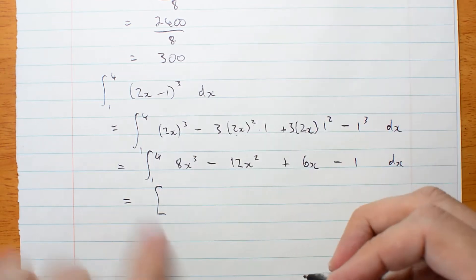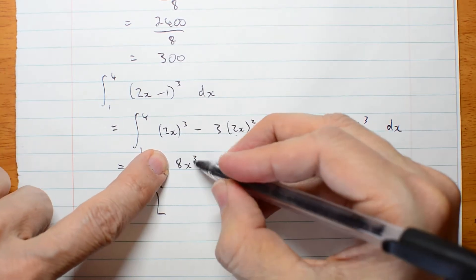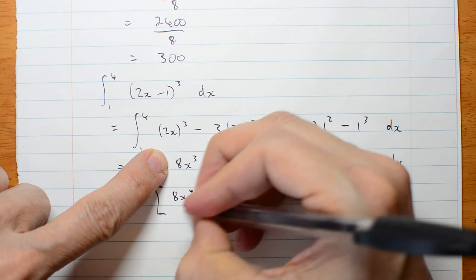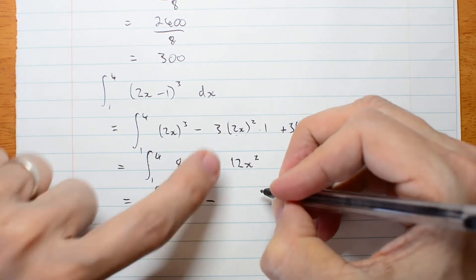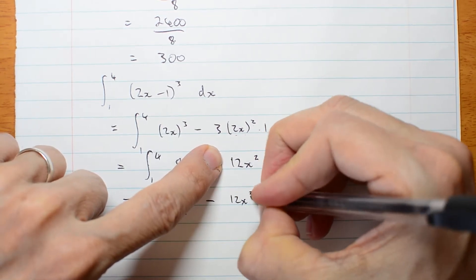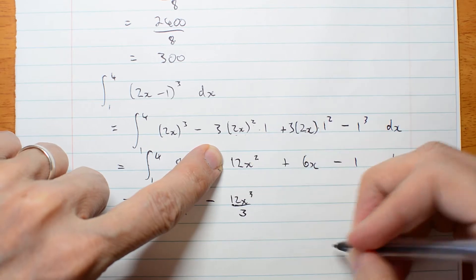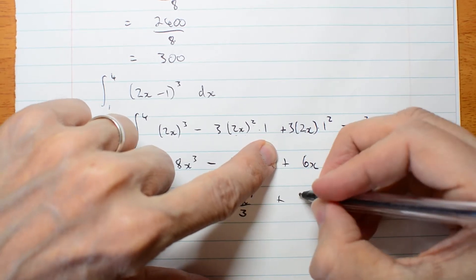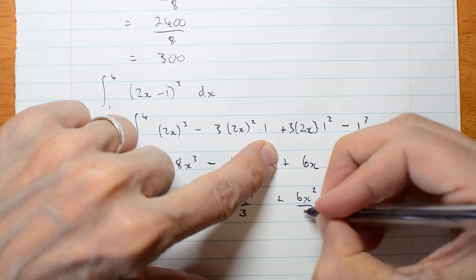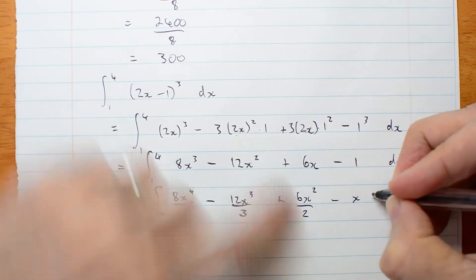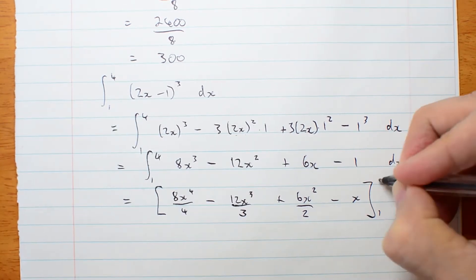Now, integrate this. 8x to the 4 on 4, 12x cubed on 3, 6x squared on 2, x from 1 to 4.